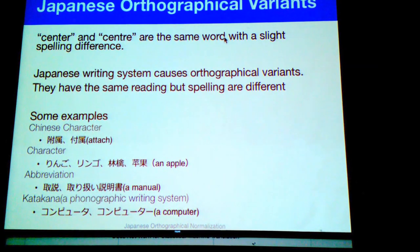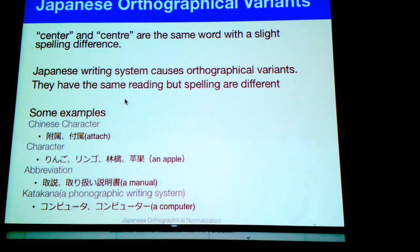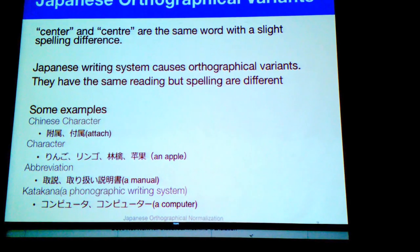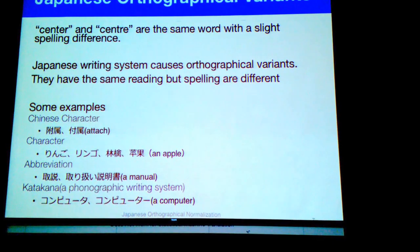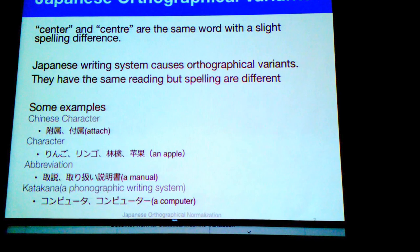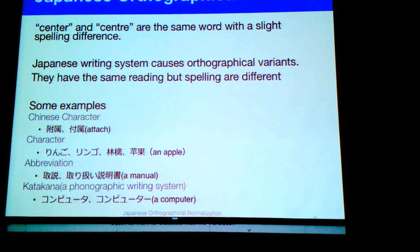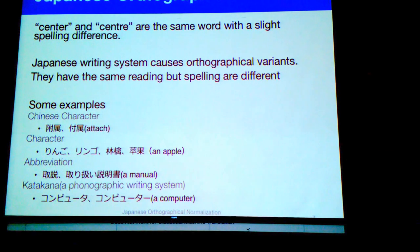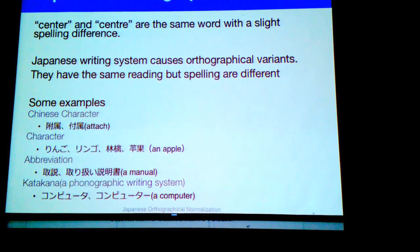The four writing systems are: Hiragana, Katakana, Chinese character, and Alphabet. For example, consider Chinese characters — the left one is an old-style character and the right one is a new-style character; this word means 'attach.' For the word meaning 'apple,' the left one is in hiragana, the second is in katakana, the third is one Chinese character, and the right one is another Chinese character.